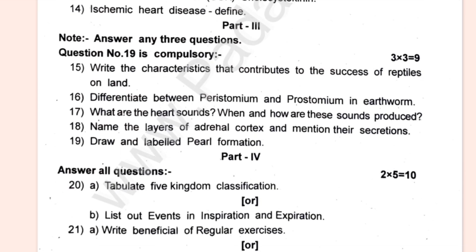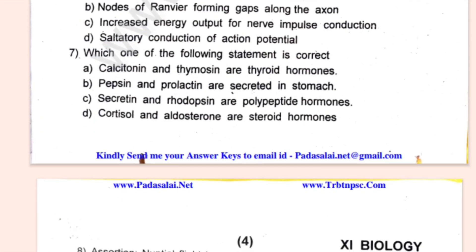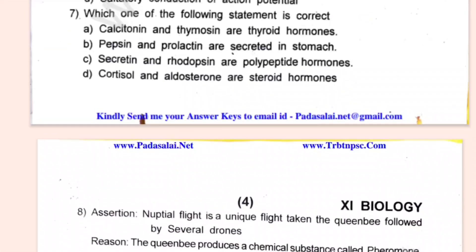Part 4 is 5 marks with 2 choices of 5 marks each: complete the classification or list out the events in inspiration and expiration. Question 21: A — write the benefits of regular exercise, and B — explain the hormones of neurohypophysis. That's it for this video — bye bye!